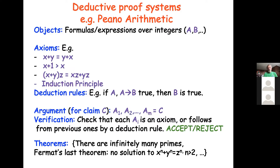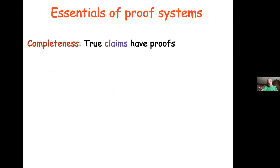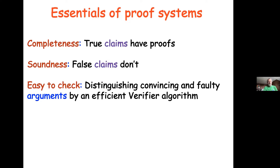We've seen many types of proof systems. Going to the essence: we want completeness — that true claims will have proofs; we want soundness — that false claims will not have proofs; and we want efficient verification, so you can distinguish convincing arguments from faulty ones. Efficient here means polynomial time in the length of the claim.